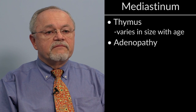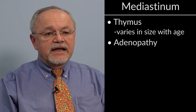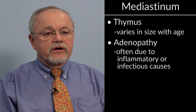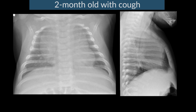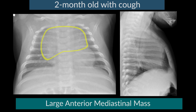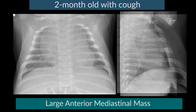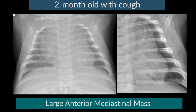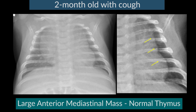The thymus and the possibility of adenopathy are very important to evaluate in children. The thymus can vary dramatically in size with age, and adenopathy in children is much more commonly caused by inflammatory or infectious causes than in adults. Here we have a two-month-old with cough and a large anterior mediastinal mass. On the frontal film, we can see through the mass on the right side, seeing normal pulmonary markings behind it. On the lateral, there is a normal trachea with normal caliber. The left chest shows a scalloped appearance every time an anterior rib crosses it, which is very characteristic of a normal thymus — which is very fatty and gets displaced by normal structures.